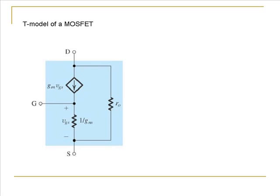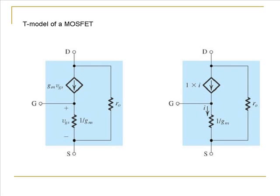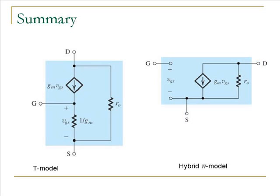The output resistance RO can be added across drain and source in the T-model. Another form of the T-model uses a current-controlled current source, where the controlling current is the current flowing through the 1/GM resistance. To summarize, in this lecture we have derived the small signal equivalent of the MOSFET. The parameters of the small signal equivalent are calculated from the DC bias point of the amplifier configuration being analyzed.